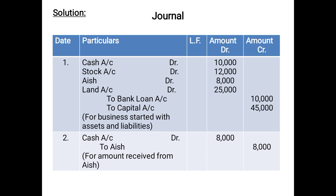When you total the debit and credit sides, the total of the debit side comes to 55,000 whereas the total of the credit side is 10,000. The assets are more than the liabilities, so the difference will be transferred to capital account as we discussed in the chapter on journal. The difference transferred to capital account is 45,000.